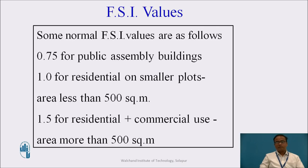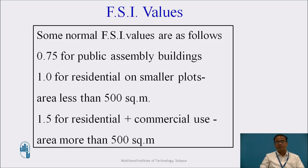Here are some FSI values: 0.75 for public assembly buildings; 1 for residential on smaller plots having area less than 500 square meters; 1.5 for residential as well as commercial use where the area is more than 500 square meters.